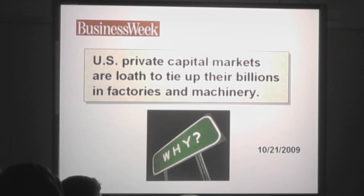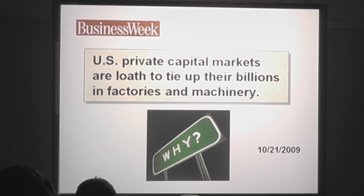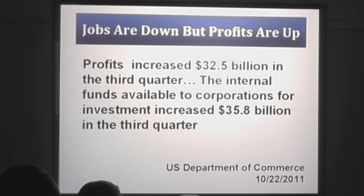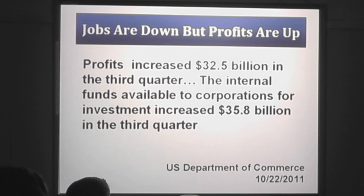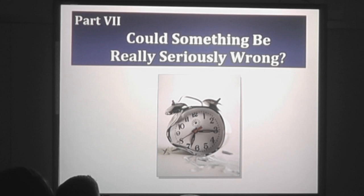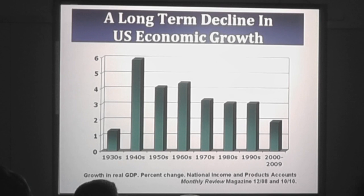The problem is you have to sell the stuff. If you put money in factories and machinery, you make something you have to sell. If people can't buy it, why invest in it? But if you put it into financial speculation, there's nothing to sell — you can make a fortune overnight. So jobs are down, profits are up. Profits increased $32.5 billion in the third quarter. All internal funds available for corporate investment increased by almost $36 billion in the third quarter. Could something be seriously wrong? What's changed is this long-term decline in economic growth going back to the 1970s — the rate of growth is stagnant, leading to sustained unemployment and people falling out of the workforce.